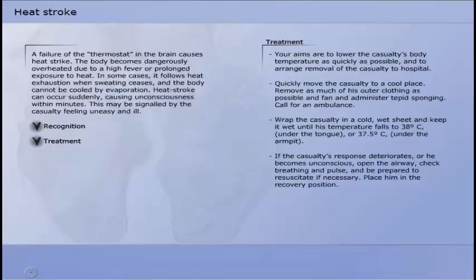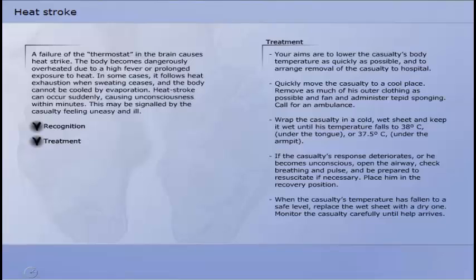Open the airway, check breathing and pulse and be prepared to resuscitate if necessary. Place him in the recovery position. When the casualty's temperature has fallen to a safe level, replace the wet sheet with a dry one. Monitor the casualty carefully until help arrives. If the casualty's temperature rises again, repeat the cooling process.